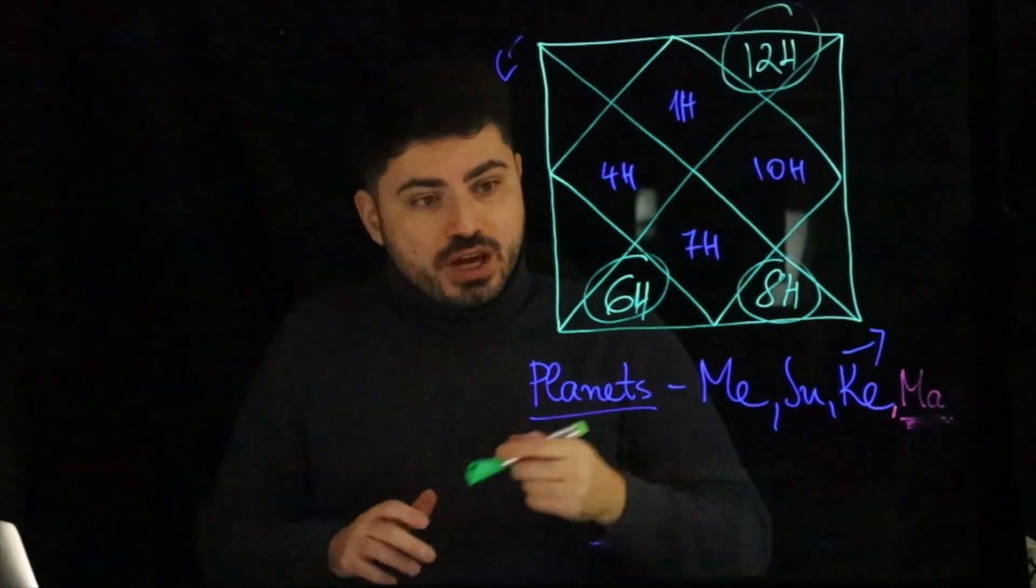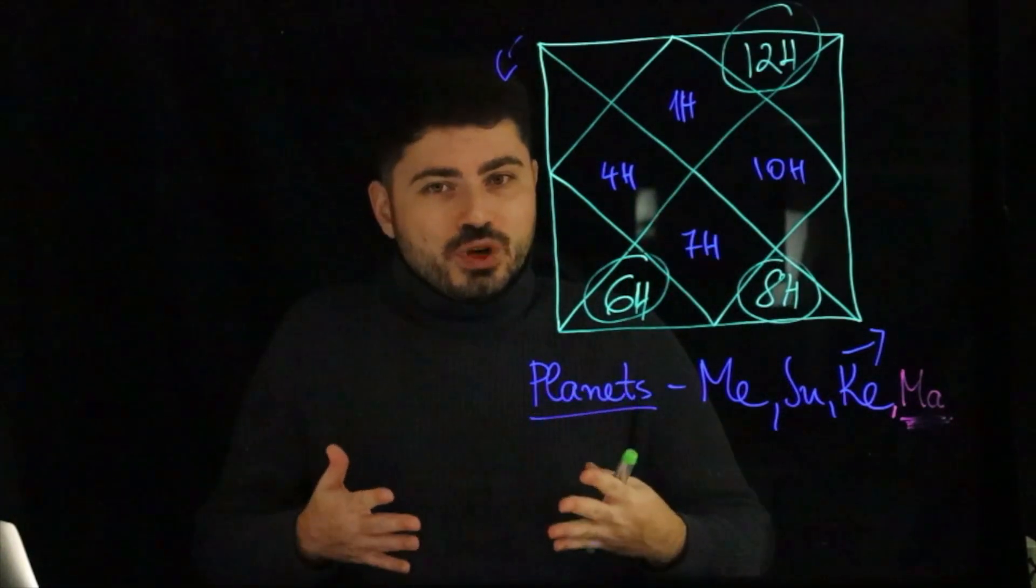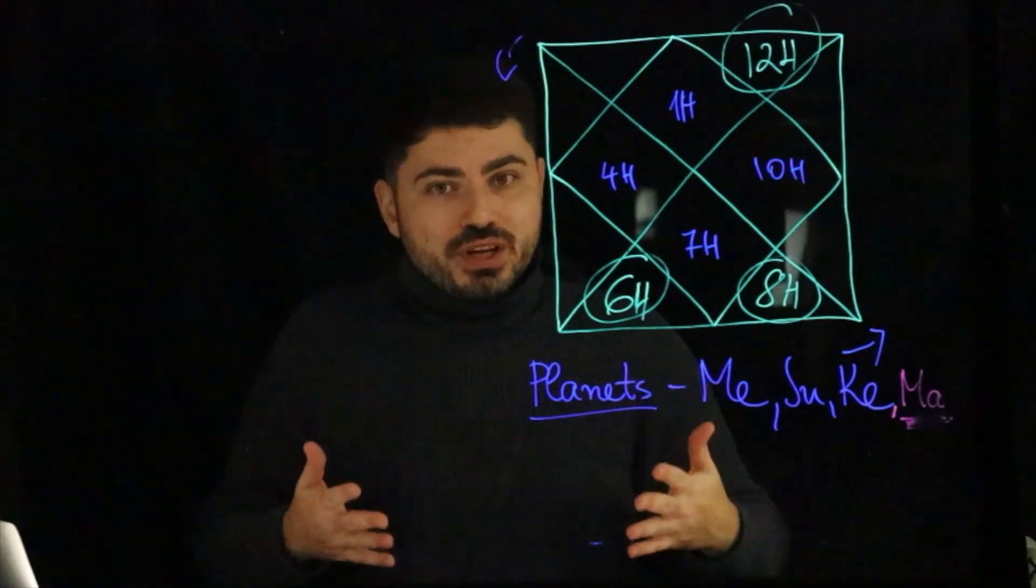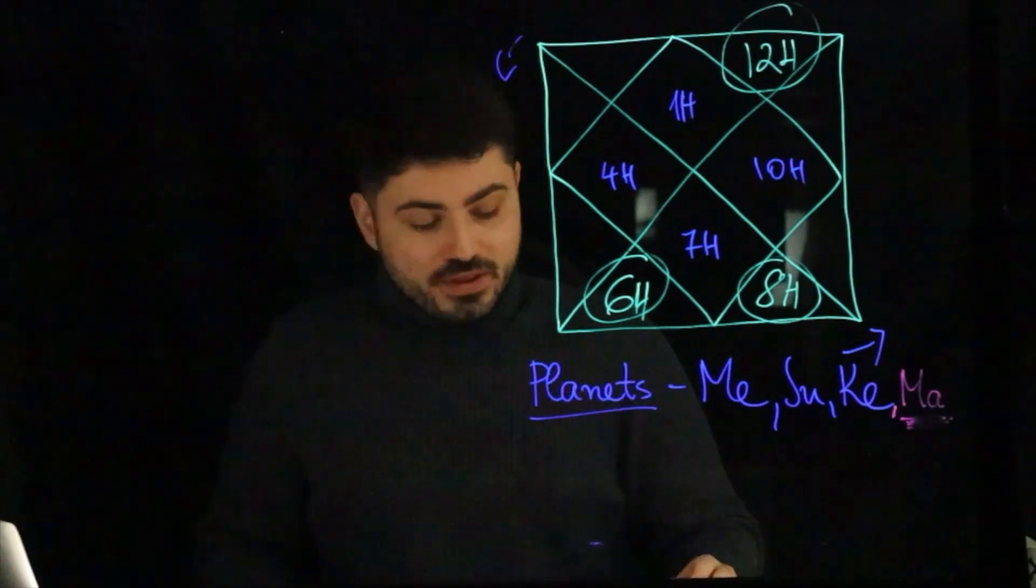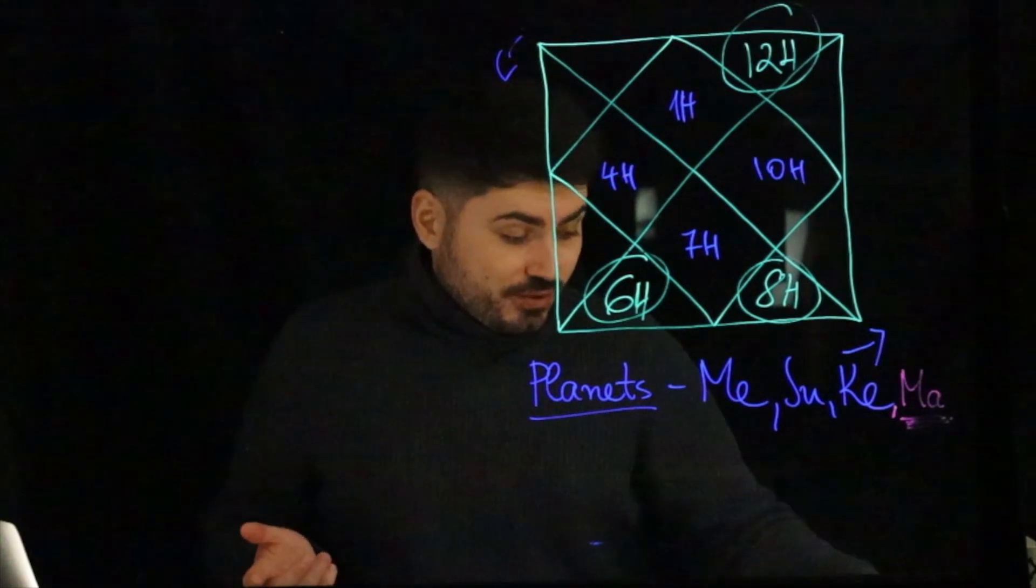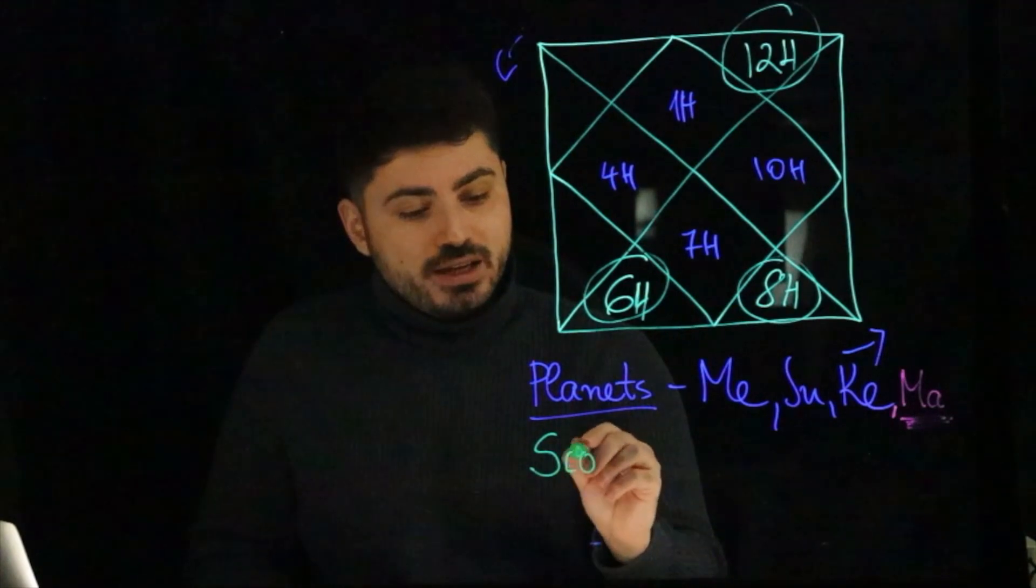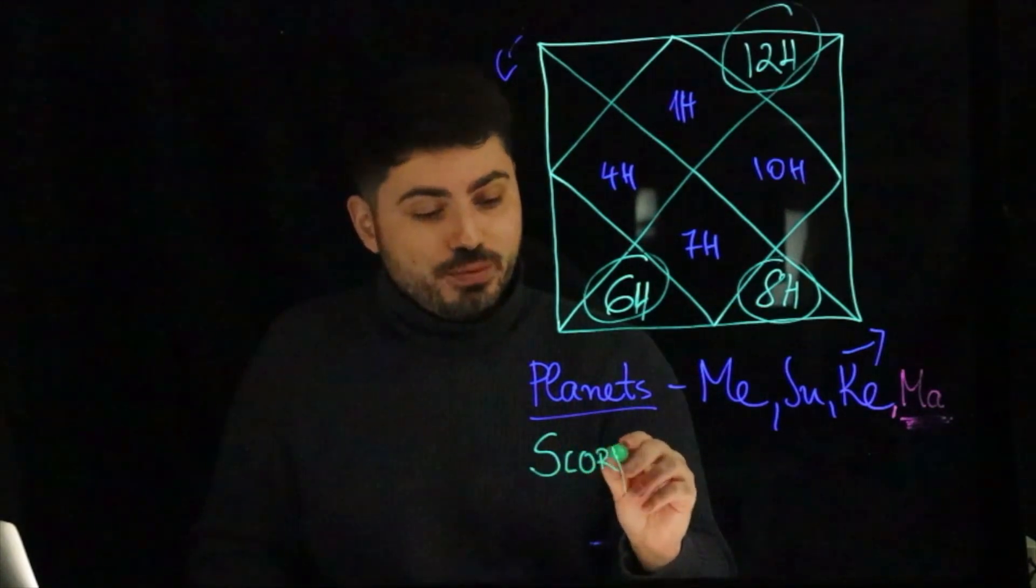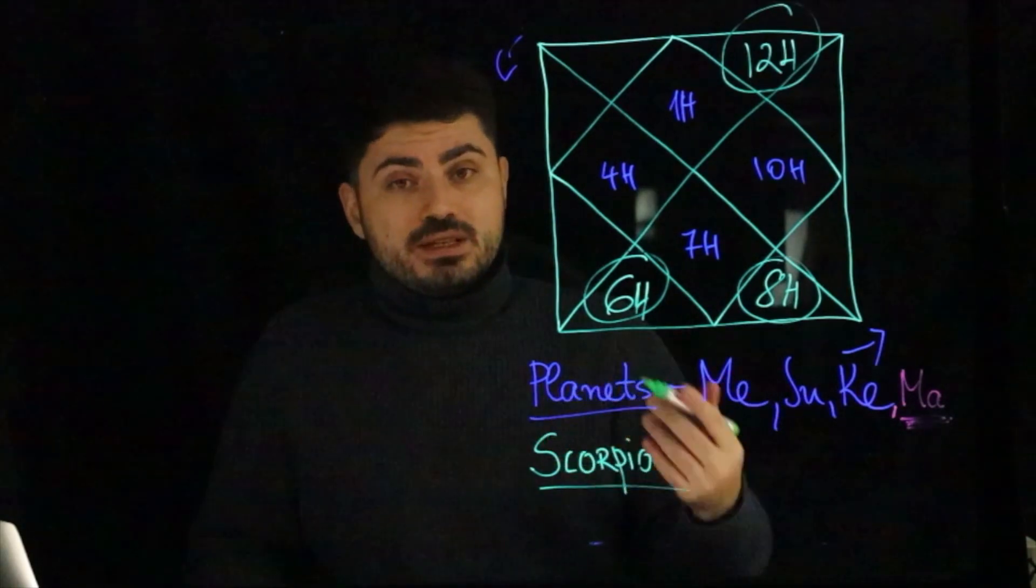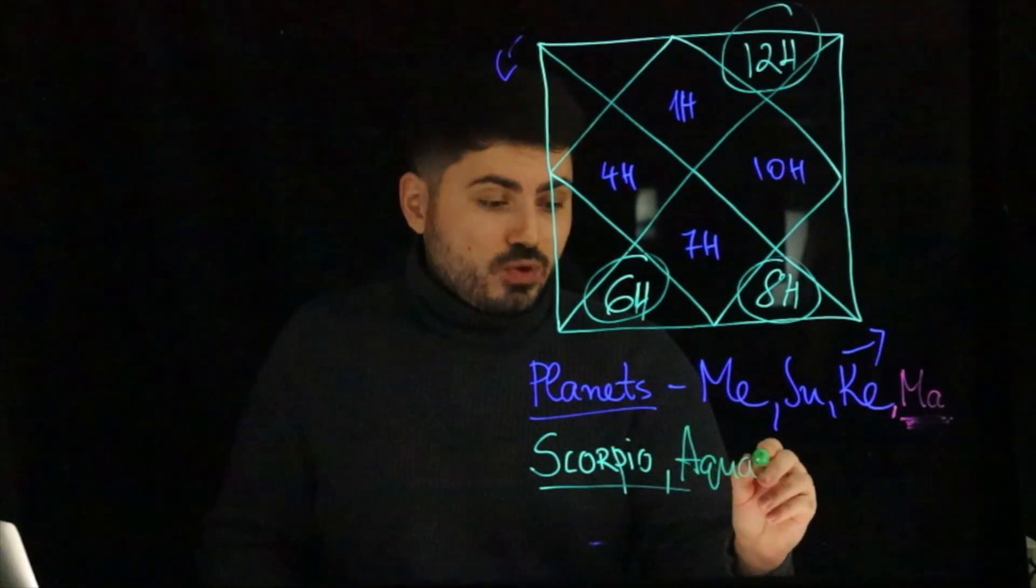If you have planets here, here, or here, this means that you are interested in the hidden world, in the other dimension, in other things that are not material. So astrology is one of the things. The other thing that you have to check are the signs. Of course Scorpio is the original sign of occult, mysticism, astrology. Aquarius for sure.